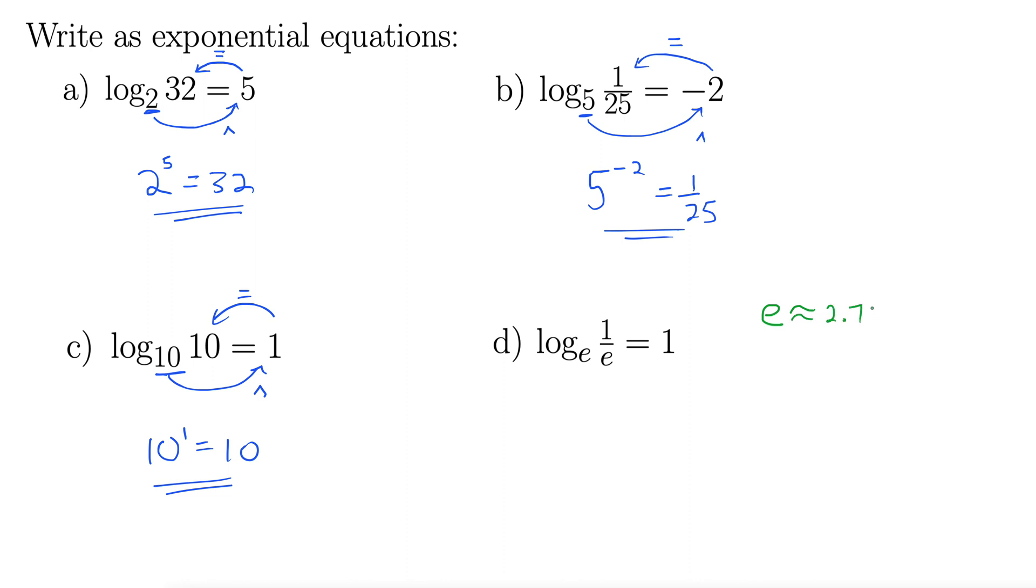It's about 2.71828, and it goes on and on and on, so you can treat it as about 2.7. But it shows up all the time in nature, economics, physics, even just pure mathematics. Some people call it Euler's number, E-U-L-E-R, pronounced Euler. We'll talk more about e later.